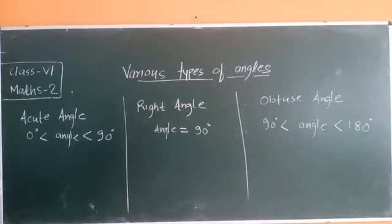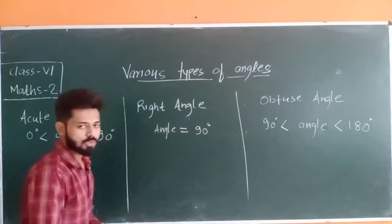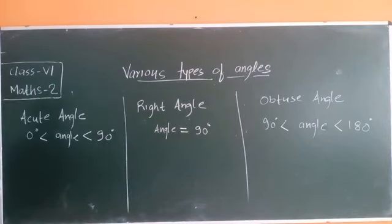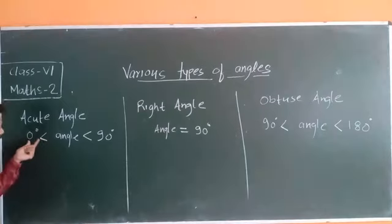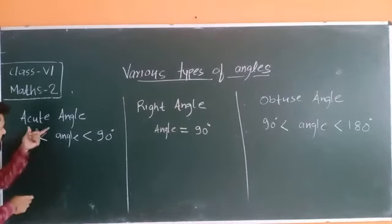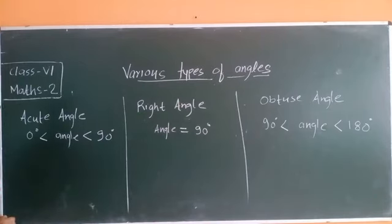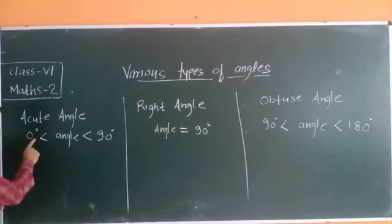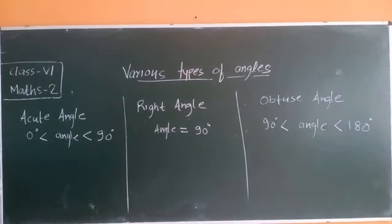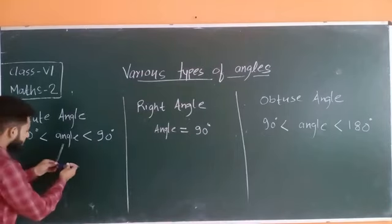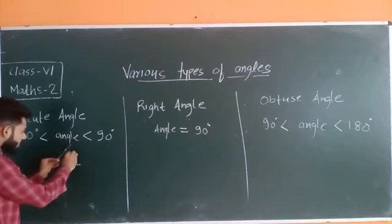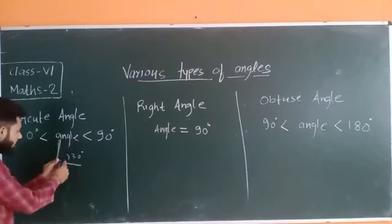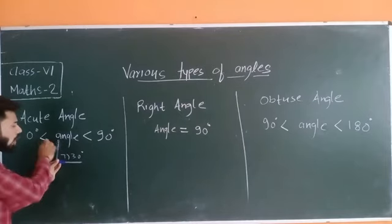The first type is acute angle. If the angle measure is greater than 0 degree and less than 90 degree, these angles are known as acute angles. For example, if this angle is 30 degrees, then it is known as an acute angle. But if this angle is 90 degrees, it is not an acute angle.